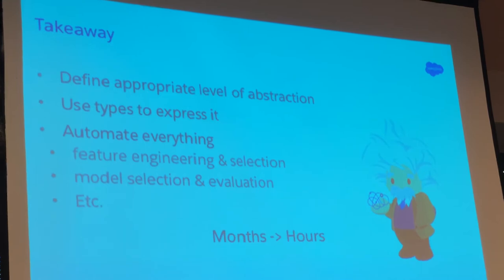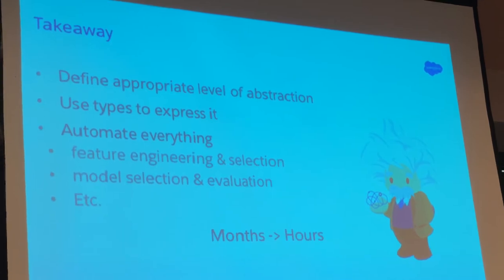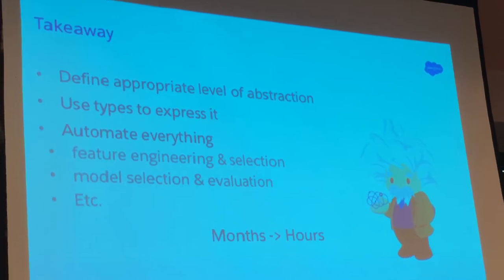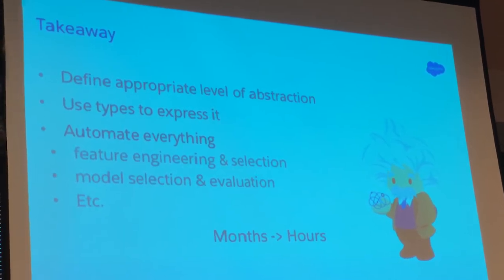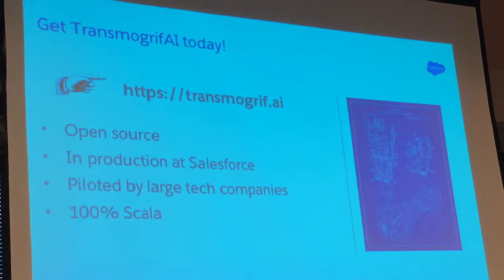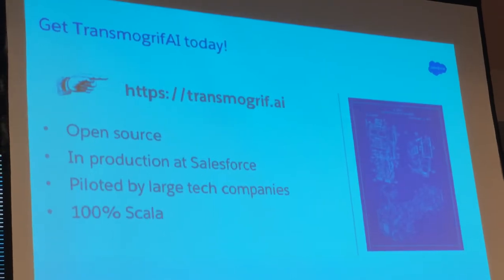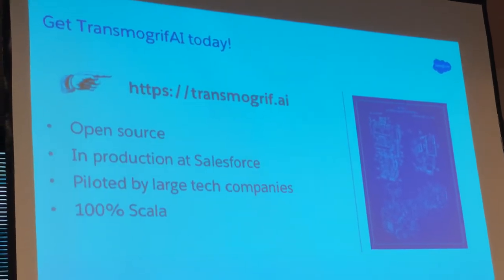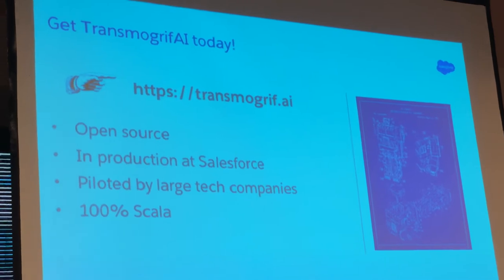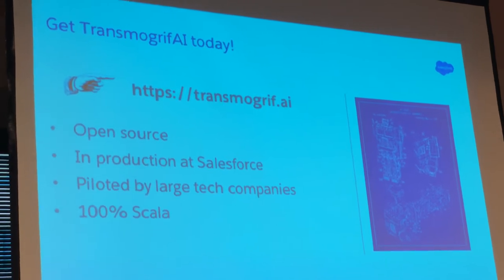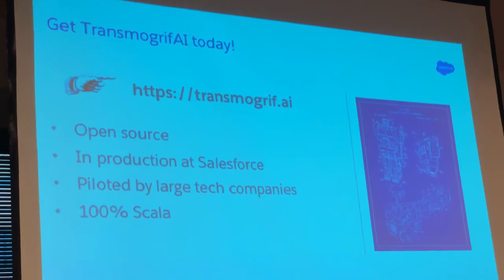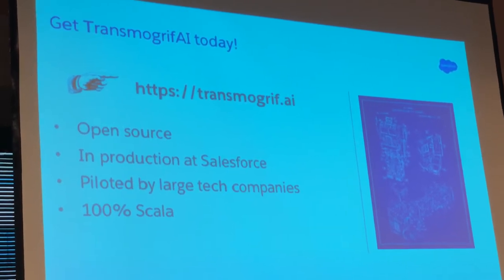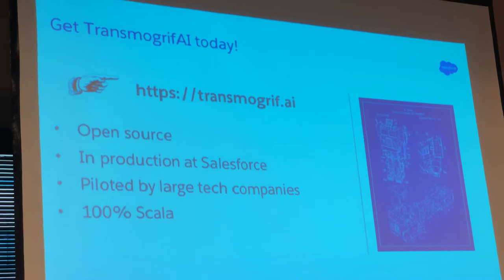Your takeaways: define your appropriate level of abstraction, use types, try to automate your processes. If you're interested in the library, here's the URL — go check it out. It's on GitHub, fully open source, it's in production, and 100% Scala built on top of Spark.